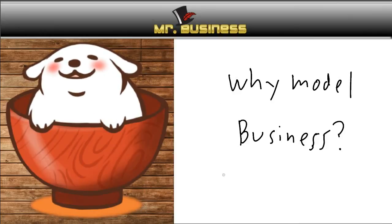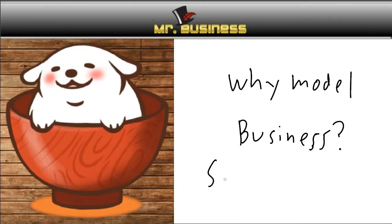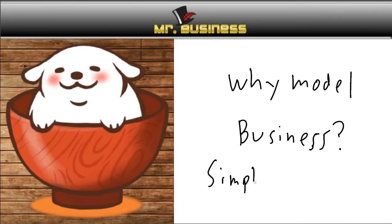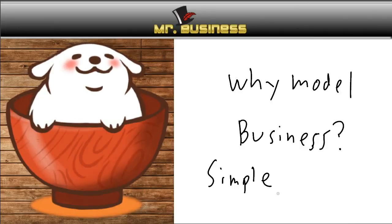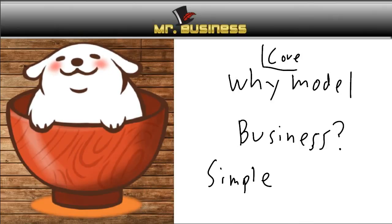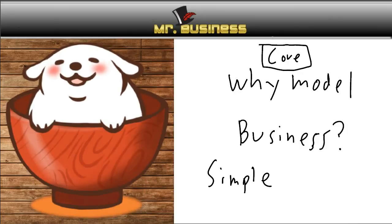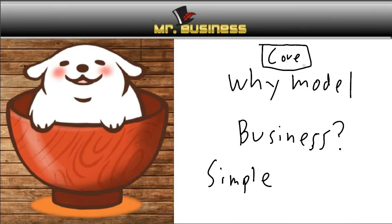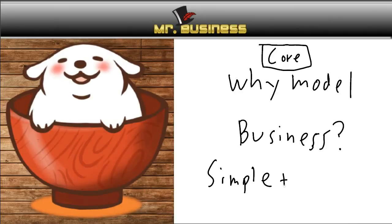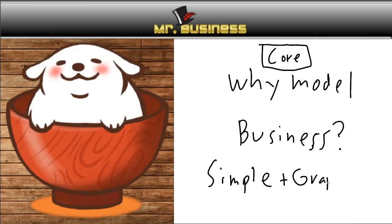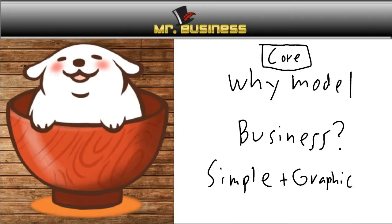Two things I like to put on business models: number one, when I make a business model, it must be simple. Why simple? So that you can actually understand it and get to the core of what it's about. A lot of times business models get so complicated you lose the core of the business — people get confused and aren't able to do what needs to be done. So you have to have the core of the business. The other thing: it should be graphical — easy to understand because of the graphics.